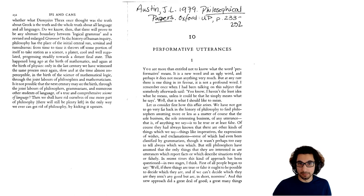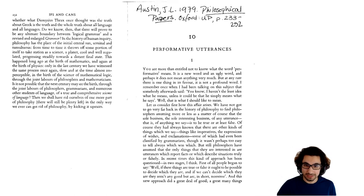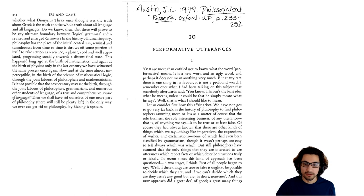Austin notes that questions and imperatives are usually a different grammatical form in many languages, and some languages have a subjunctive used for third-person wishes — like 'let there be light.' But still, philosophers have assumed that the only things they're interested in are utterances which report facts truly or falsely. In recent times, this approach has been questioned in two stages. First, people began to say, if these things are true or false, it ought to be possible to decide which they are — and if we can't decide, they aren't any good, but are, in short, nonsense.